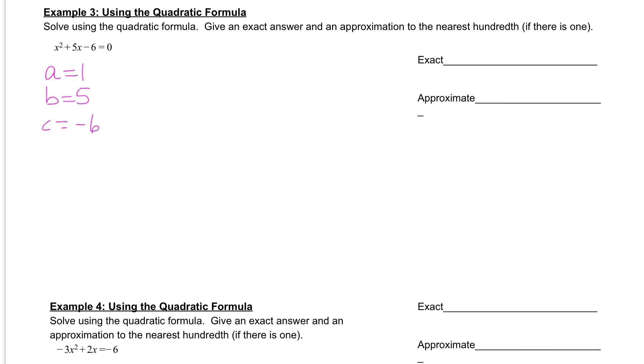And then from here what we're going to do is we're going to find our discriminant. That will tell us what type of answers we can expect to see. Our discriminant, remember, is b squared minus 4 times a times c. This is the number underneath that radical.